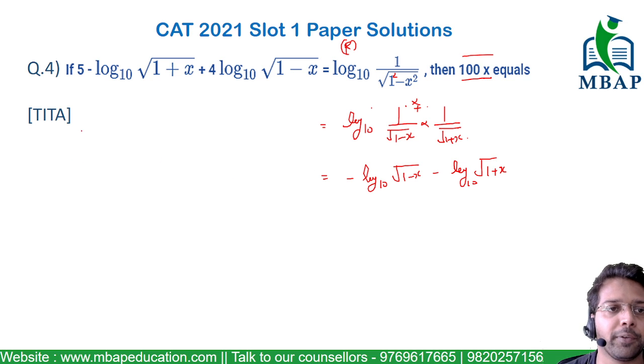Let's write what we have on the left-hand side: 5 - log₁₀√(1+x) + 4log₁₀√(1-x).